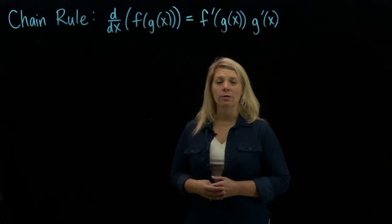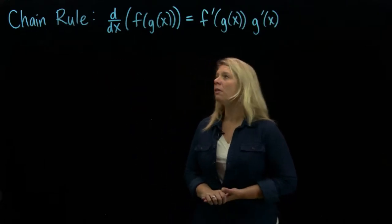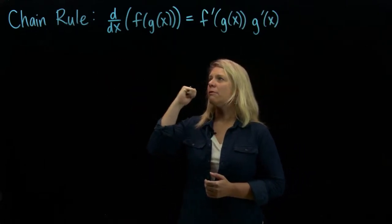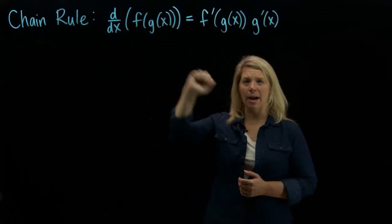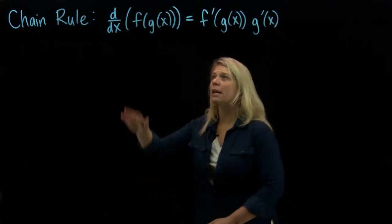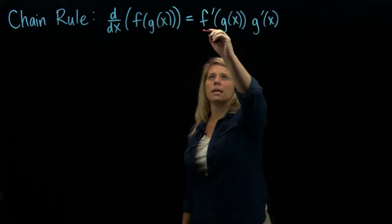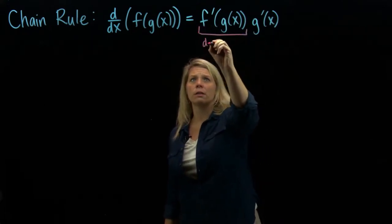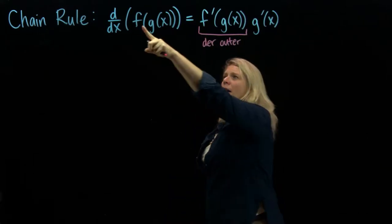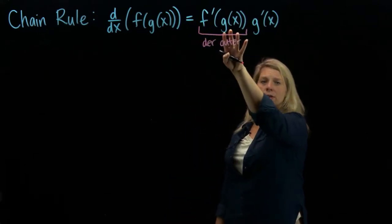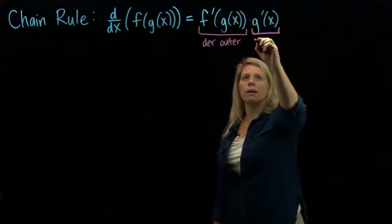In this video we're going to look at using chain rule to find derivatives. Up here at the top we have chain rule written down. This says that if we're going to find the derivative with respect to x of f of g of x — a function inside another function — we find the derivative by taking the derivative of the outer function, f prime, leaving the inside function alone, and then multiplying by the derivative of the inner function.